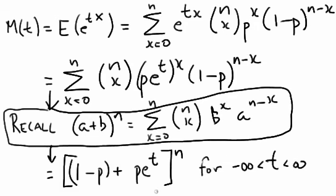That's because 1 minus p and p e to the t are finite for every fixed t. So what we have here is our moment generating function that we found for the binomial random variable.